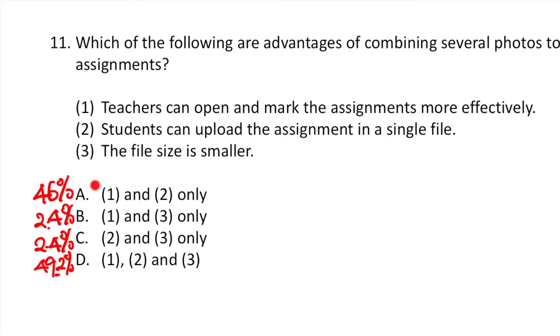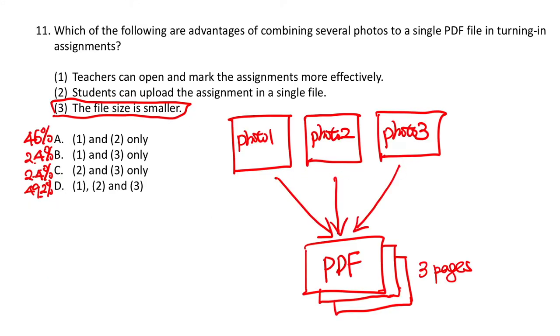As we can see from these figures, most of the students answered A or D, and the only difference between these two answers is option number 3, the file size is smaller. We can look at the following example. Suppose we are going to combine three photos into a single PDF file with three pages. Will this PDF file have a smaller file size? The answer is actually no, because there is little or no compression in a PDF file. Therefore option 3 is not correct, and the answer is A.